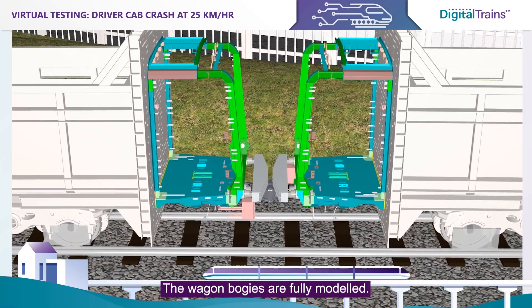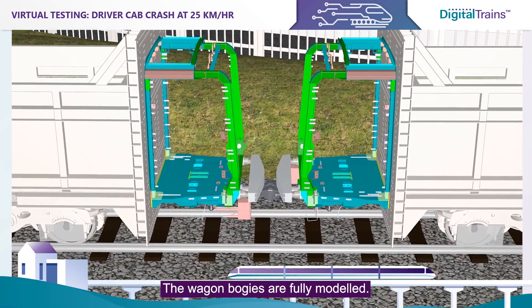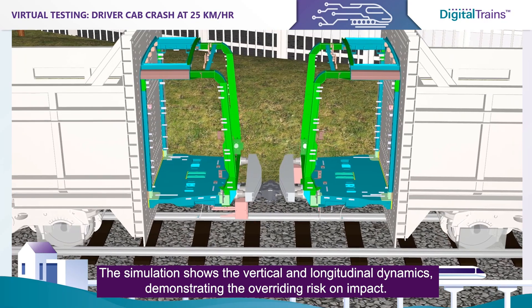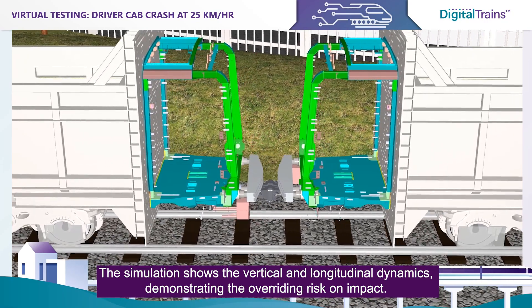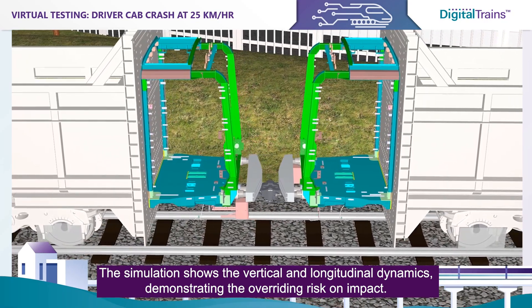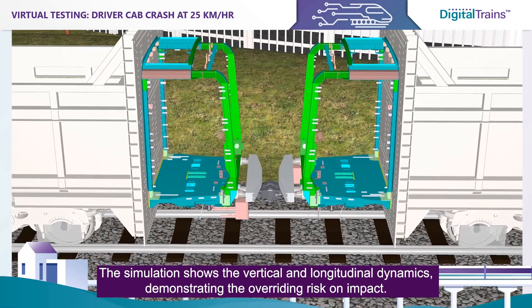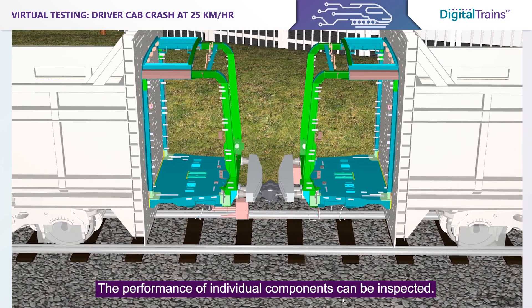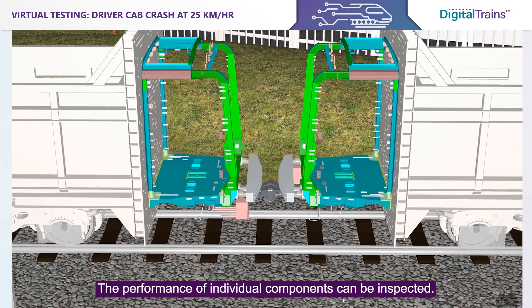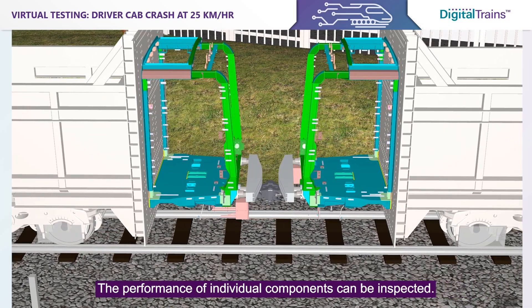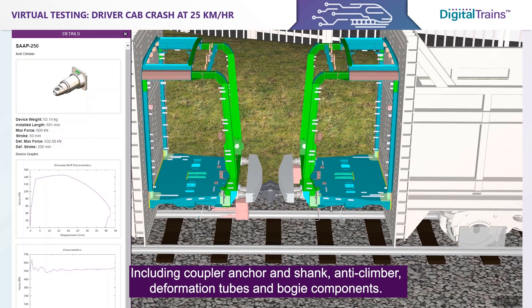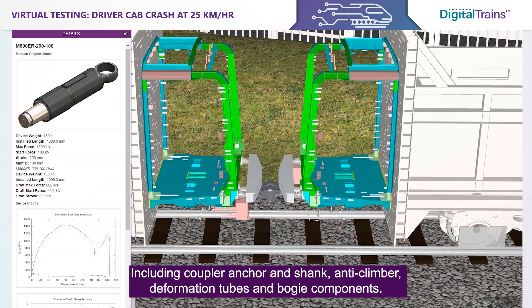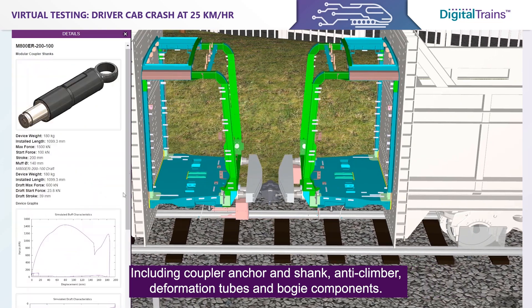The wagon bogies are fully modeled. The simulation shows the vertical and longitudinal dynamics, demonstrating the overriding risk on impact. The performance of individual components can be inspected, including coupler anchor and shank, anti-climber deformation tubes, and bogie components.